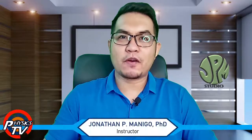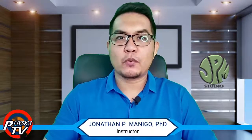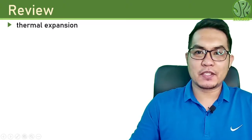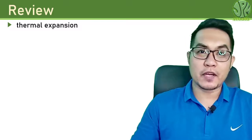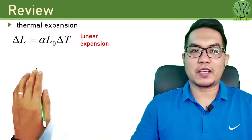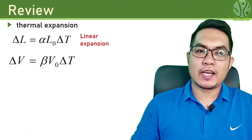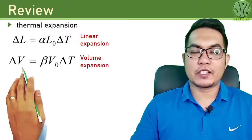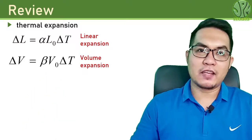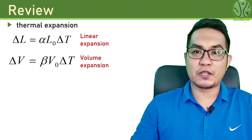Hello and welcome back to the course on Physics for Engineers. We are still on chapter 10, which is all about thermodynamics. Before we proceed with this lesson, let us first review some concepts. In the previous lesson we discussed thermal expansion — what happens when you change the temperature of an object and it expands. If the expansion is linear, the change in length is given by one expression; if it's volumetric, the change in volume is given by another. Alpha and beta are the coefficients of linear and volume expansion respectively.